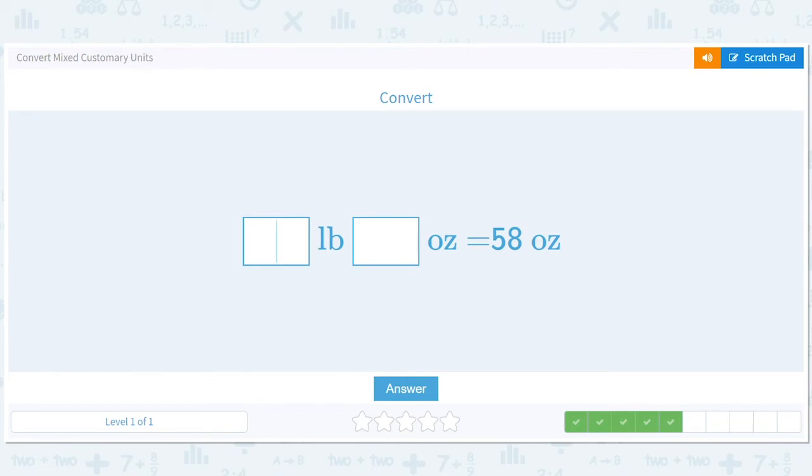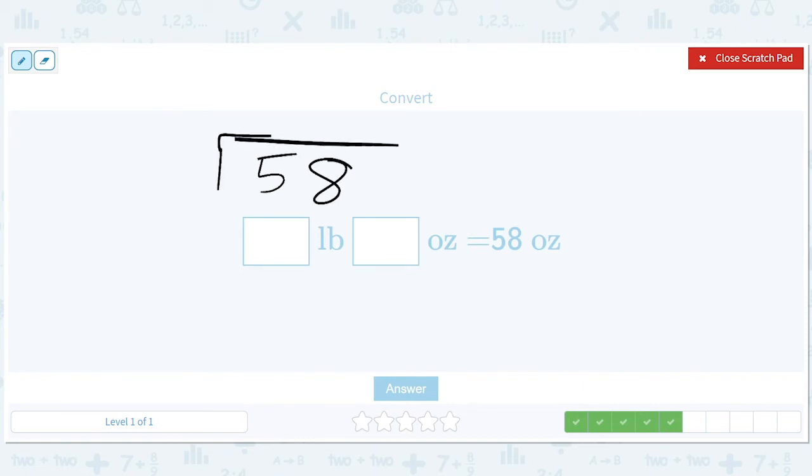58 ounces. Okay. So there are 16 ounces in a pound. So if we divide the number of ounces by 16, we should get a window into how many pounds we have. So three, three times six is 18, right? So we get three times one is three. So 48 gives us 10 here. So we have three remainder 10.